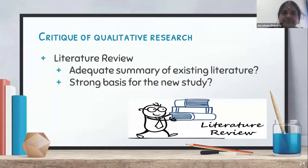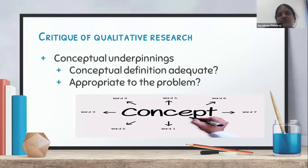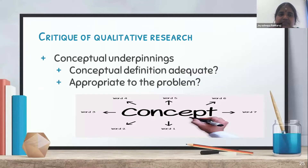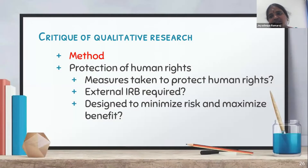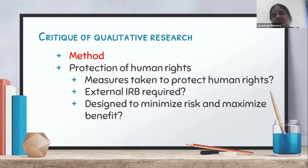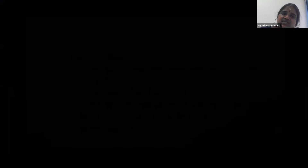Then comes conceptual underpinnings. Conceptual definitions are very important in qualitative studies because the study flows from them. You check whether the conceptual definitions are adequately done and appropriate and relevant to the research question or problem. Then comes the method — ethical clearance and protection of human rights. You check whether measures are taken to protect human rights, whether an external review board is required and obtained, and whether the study is designed to minimize risk and maximize benefit.